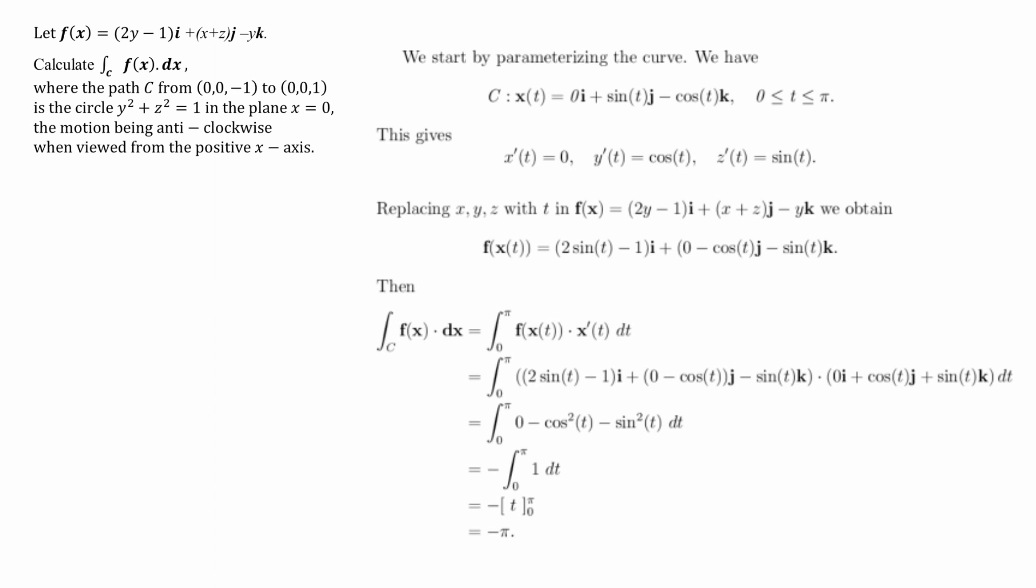So I've put here the f of x of t dot with the x dash of t. And when we work all that out, all the vectors drop out and we're just left with an expression which turns out to be negative 1, which is easy to integrate. And so our answer ends up being negative pi.